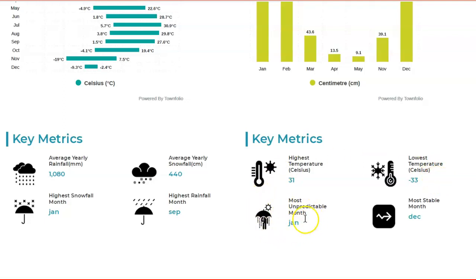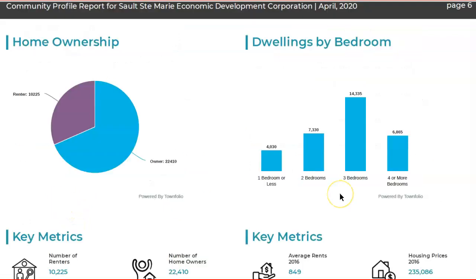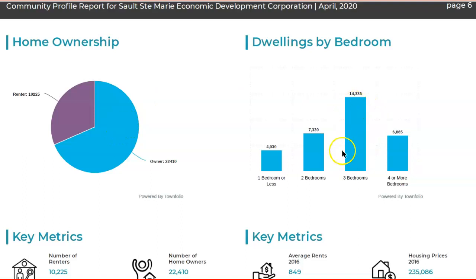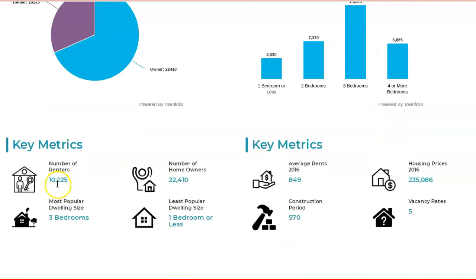The most unpredictable month weather-wise is January, and it also has the most snowfall of the whole year. When it comes to ownership, the majority of houses in the community are owner-occupied, with the difference being renters. There are 10,225 renters in the community and 22,410 homeowners. The majority of houses are in the three-bedroom range, and the average rent is $849 per month.